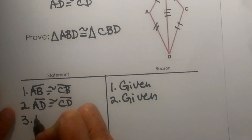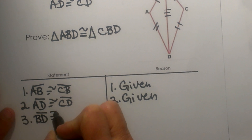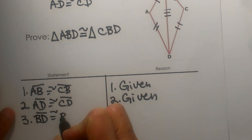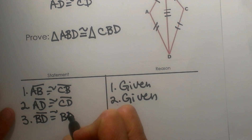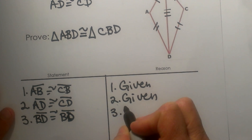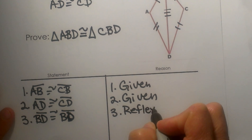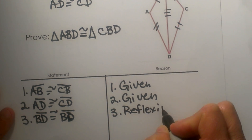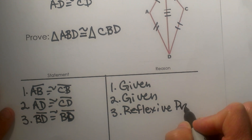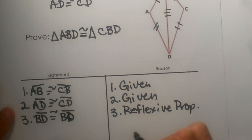So that is what I am going to use as my third statement: BD is congruent to itself, BD. And how do I know that? Because that is the reflexive property. Anytime something is congruent to itself, that is the reflexive property of congruency.